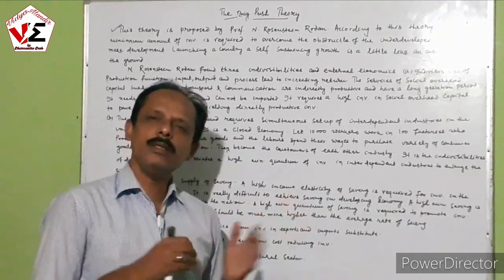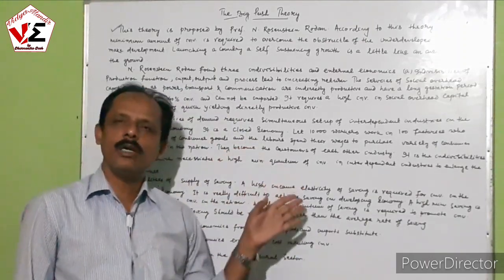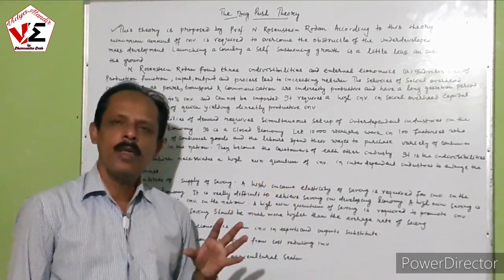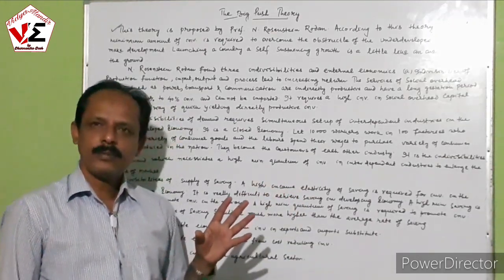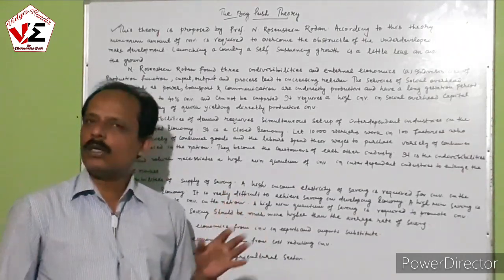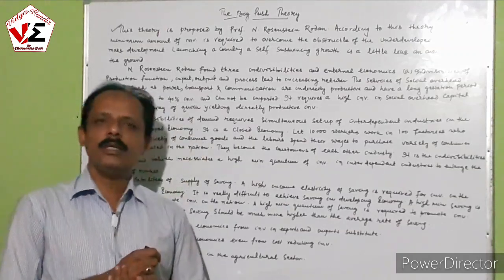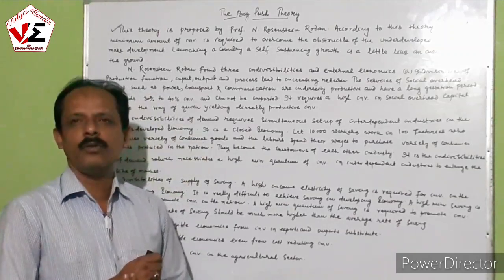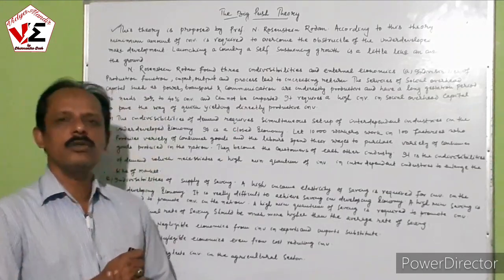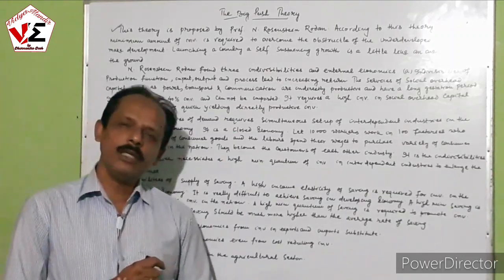Professor Rosenstein Rodan compares the takeoff of the aeroplane to the upward movement of the nation — the first individuality in overhead capital, the second individuality of demand, and the third individuality of supply of saving. These three factors are responsible for the upward movement of the economy through investment in power, transport, and communication in a closed economy system. However, this theory has also been criticized by certain economists.